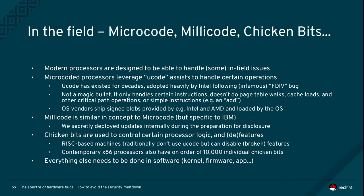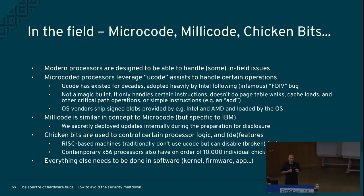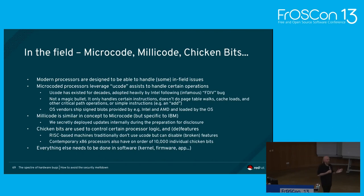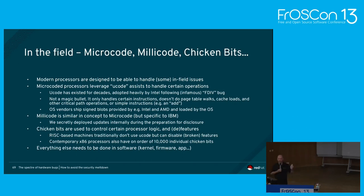Modern processors are designed to handle some updates in the field. On Intel machines you have something called microcode — a signed encrypted binary blob which, when loaded, can change some processor behavior. It's not magic — it cannot change how page table walks work, how the cache works, or how the add instruction works. But it can be used to fix some things, and more importantly it can be used to turn things off that are known to be broken. We also have in the average x86 processor about 10,000 chicken bits — called that because hardware designers can 'chicken out.' It means: I like my new feature but I might have gotten it wrong, so I'll have a way to turn that off.